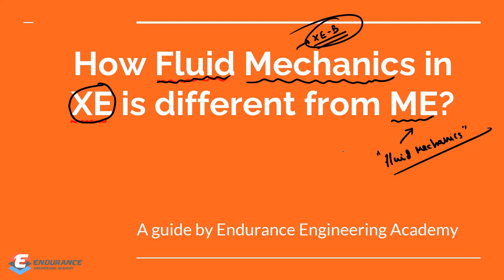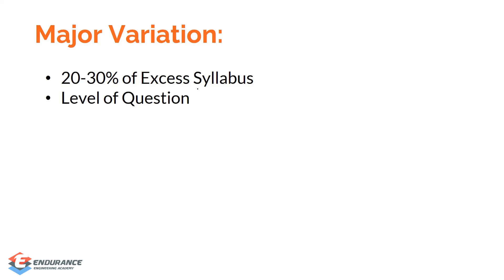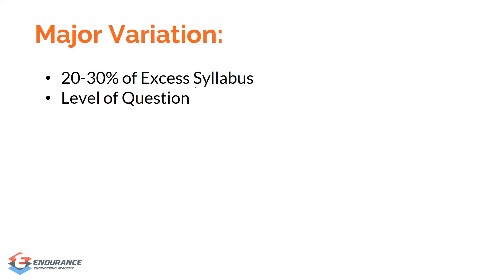There are two major differences. The first difference is the syllabus — the syllabus which you are going to prepare for XC is around 20 to 30 percent extra compared to ME. So the syllabus in XC is 20 to 30 percent more than that of ME. I'm talking only about fluid mechanics.